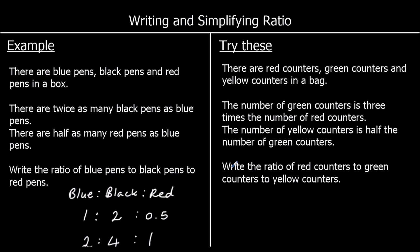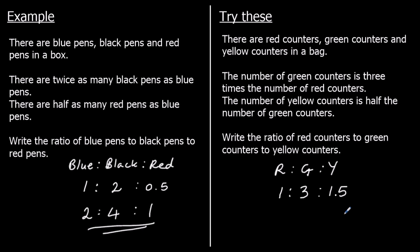One for you to try, so give this one a go. There are red counters, green counters, and yellow counters in the bag, so it's going to be red to green to yellow. The number of green counters is three times the number of red. So if there's one red, there are three times as many green — the ratio of red to green is 1 to 3. The number of yellow counters is half the number of green, so half of three is 1.5. We've got a ratio of 1 to 3 to 1.5. We can't have 1.5 yellow counters, so let's double all of them, giving 2 to 6 to 3. For every two red counters, there are six green counters and three yellow counters.